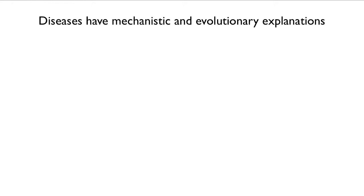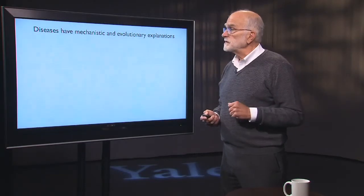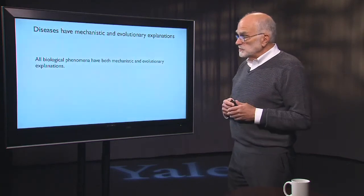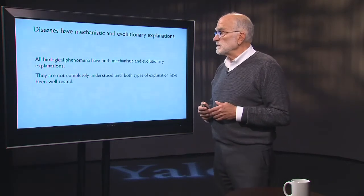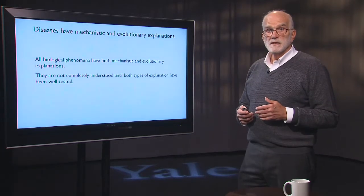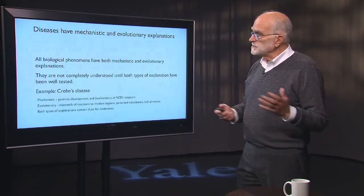Nothing in biology is completely explained until you've explained it both ways. By mechanistic, we mean basically chemistry and physics, and by evolutionary, we mean all of the consequences of selection and history. All biological phenomena have both explanations, and we can't really understand them until we've worked through it both ways.